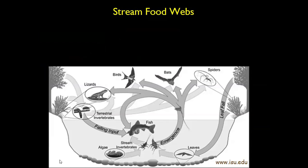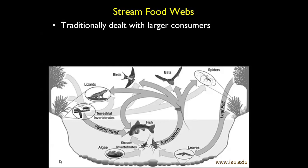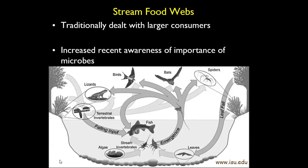We've got leaf fall coming in, it gets broken down by invertebrates, fed on by fish. Those invertebrates emerge and fly away — and there are studies showing that when trout invade some of these ecosystems and reduce invertebrate abundance, it actually affects spider populations and lizard populations because they don't have as much emerging insects to feed upon.